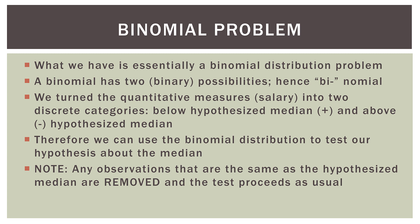Now note, any observations that are the same as the hypothesized median are removed and the test proceeds as usual. So if our hypothesized median was $70,000 and there was a value of $70,000 in our data set, we would actually just remove that value and then proceed as we would before. We would have one less observation.